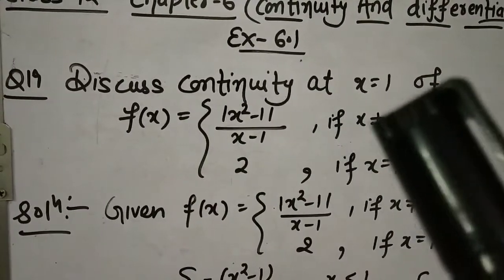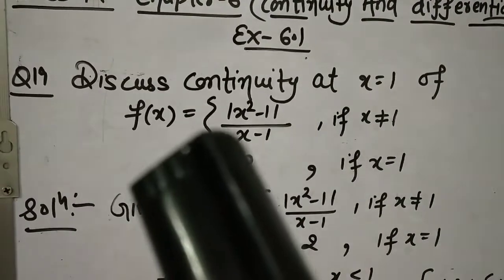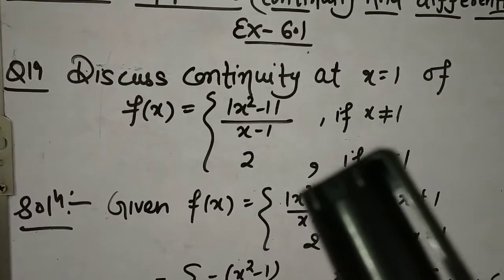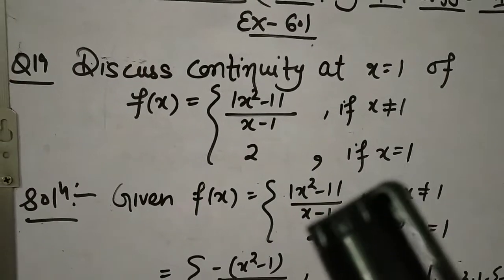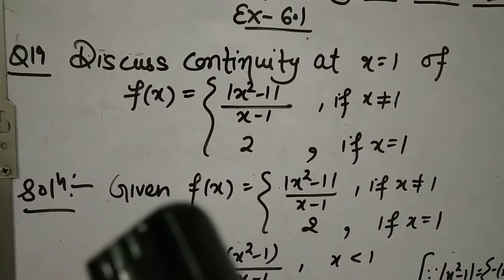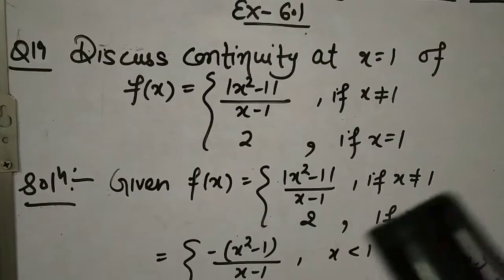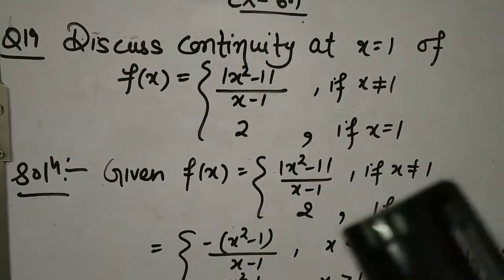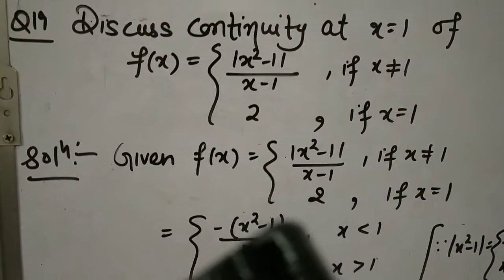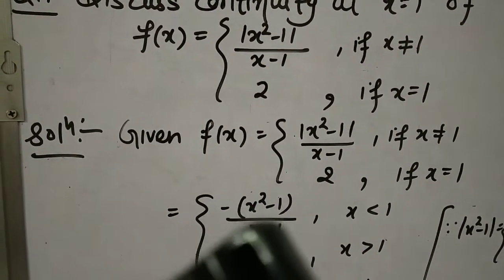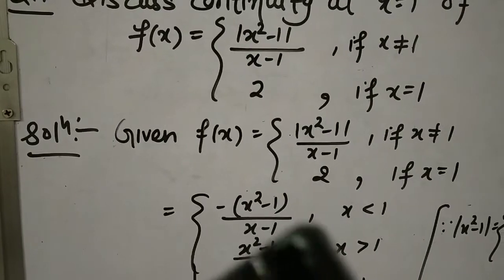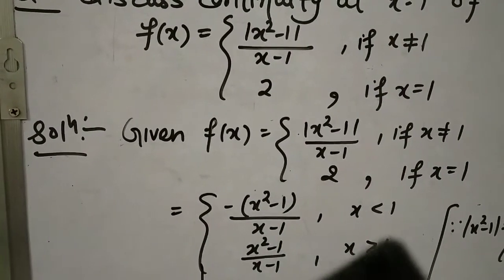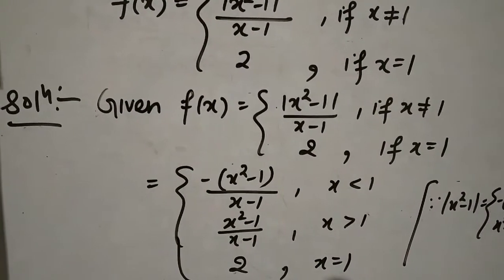Question: Discuss continuity at x = 1 of f(x): |x²-1|/(x-1) if x ≠ 1, and 2 if x = 1. Given function को break करेंगे: -(x²-1)/(x-1) when x < 1; (x²-1)/(x-1) when x > 1; and 2 when x = 1।